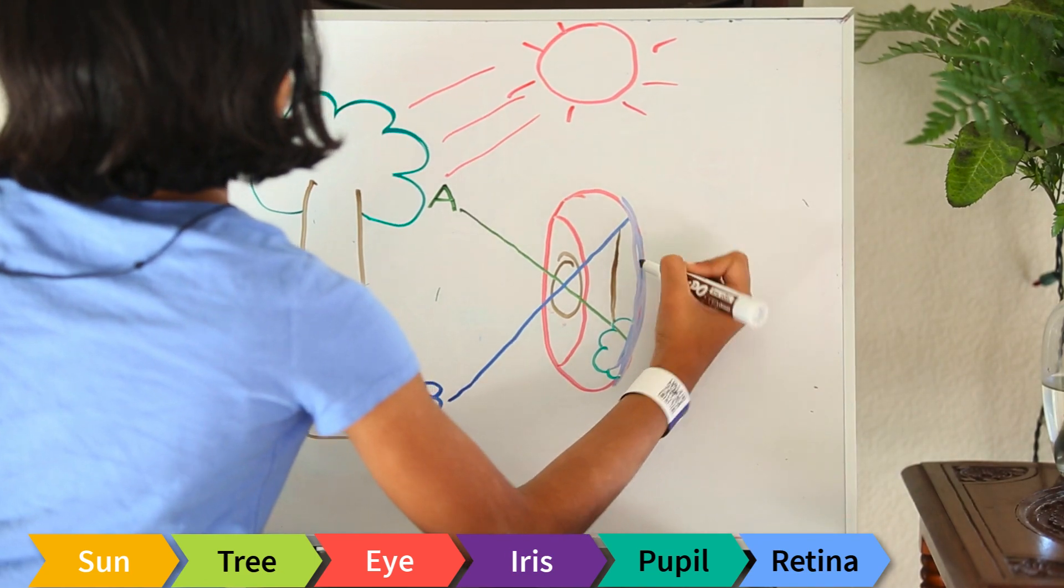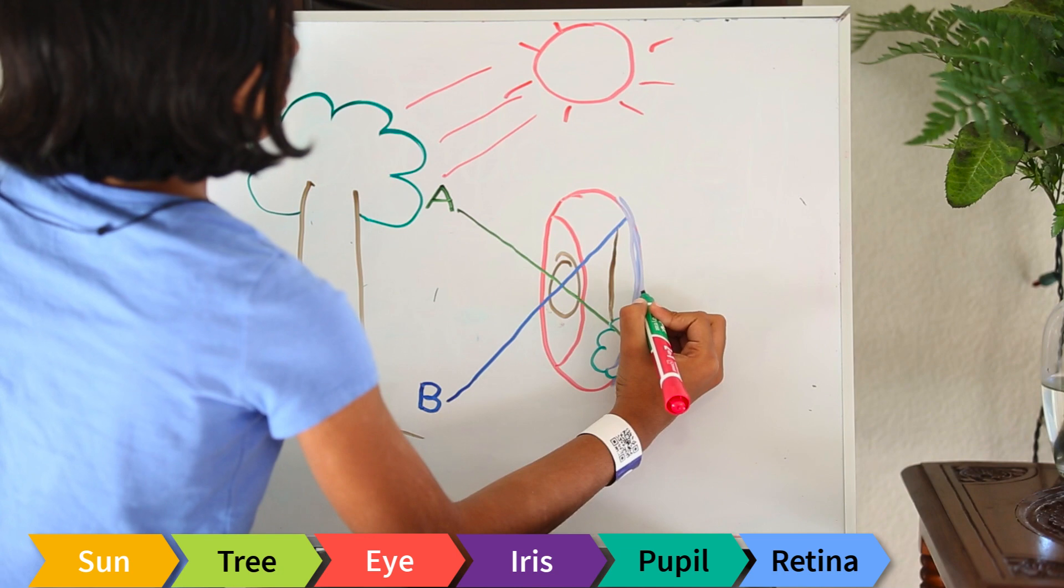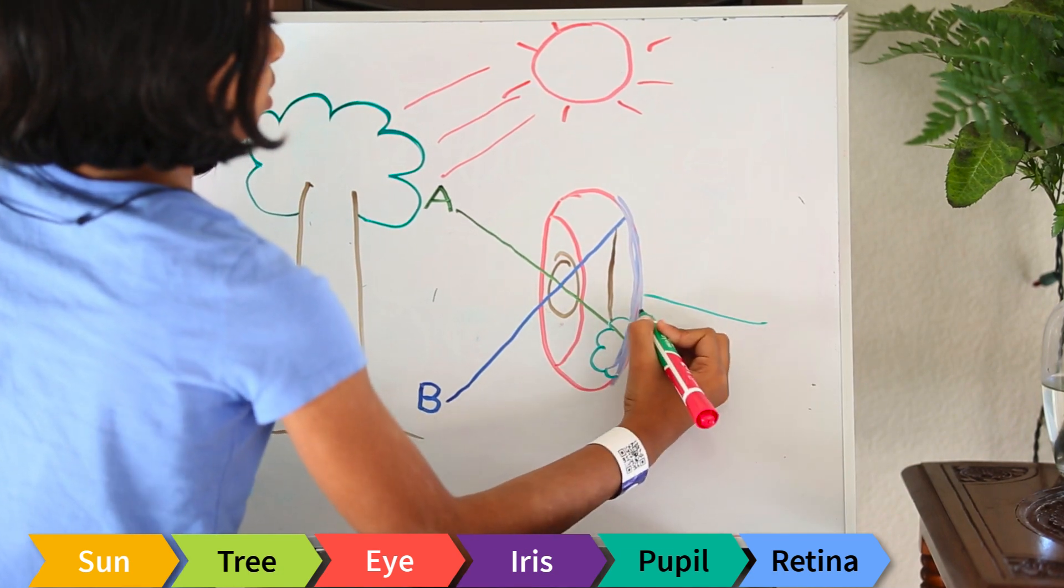So as you can see, the leaves of the tree are backwards, upside down.